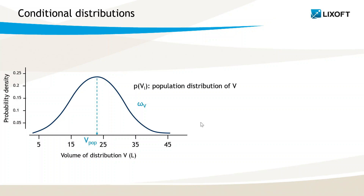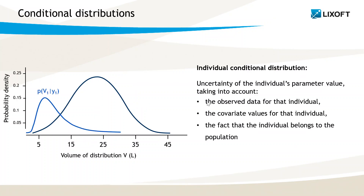We can also look at the individuals of the data set individually and estimate their individual volume value. The volume for an individual is described by a conditional distribution, for example for the volume for individual 1. It represents the uncertainty of the volume for ID1, taking into account the observed data for ID1, the covariate values for ID1, and the fact that the volume for ID1 belongs to the population distribution. It is called conditional distribution because it is conditional on the already estimated population parameters.